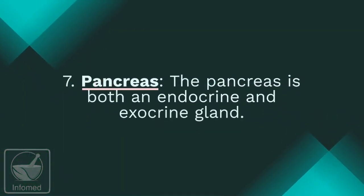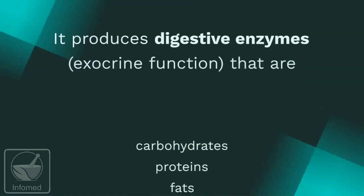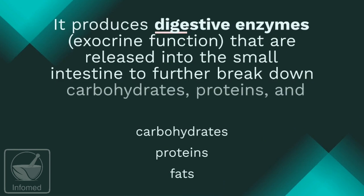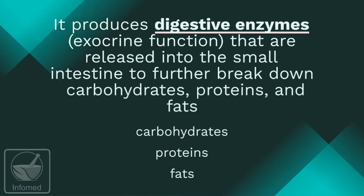Number seven: the pancreas. The pancreas is both an endocrine and exocrine gland. It produces digestive enzymes — an exocrine function — that are released into the small intestine to further break down carbohydrates, proteins, and fats.